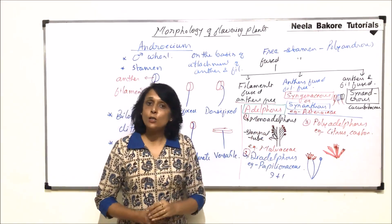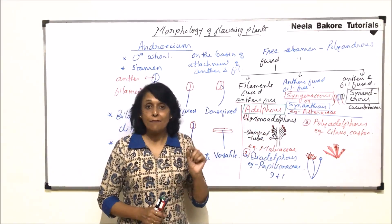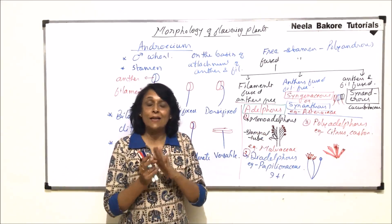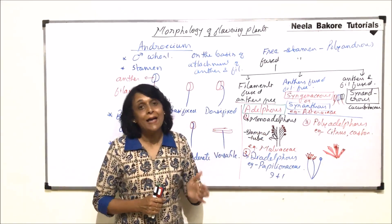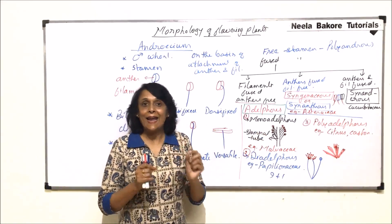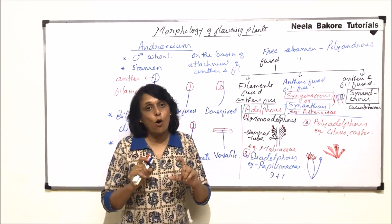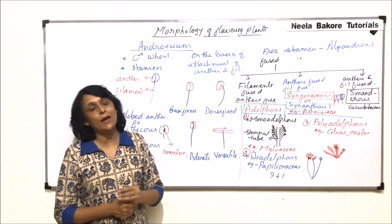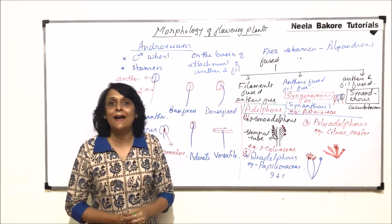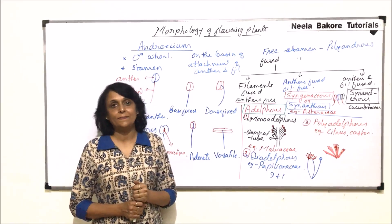In the next part, we will talk about whether the anther is attached to some other wall or not, and whether there can be different lengths of filaments. We will try to classify stamens on these two additional criteria.